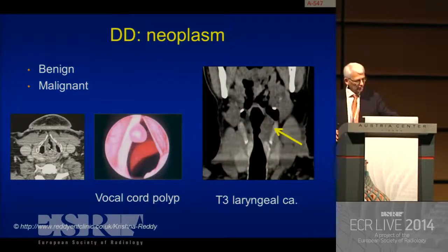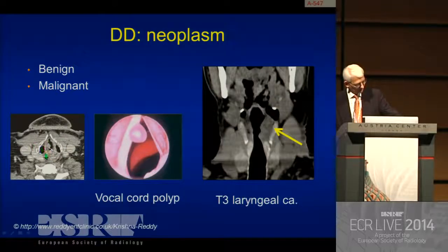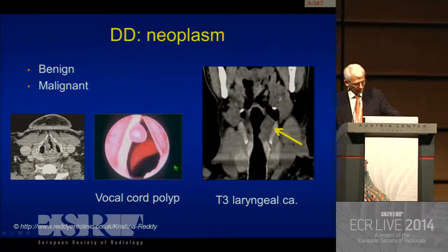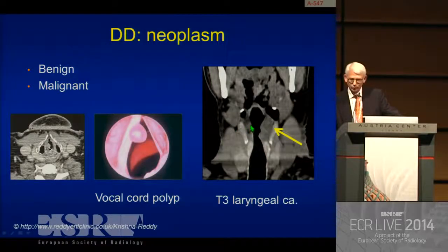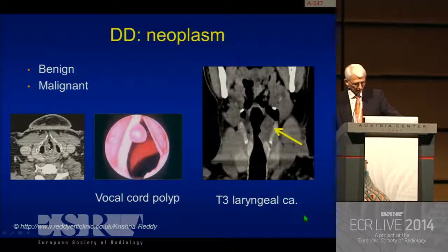Just some imaging examples. This is a CT scan at the level of the right true vocal cord — you see this benign vocal cord polyp, and this is the endoscopic view. This is a benign lesion causing hoarseness. And this is laryngeal cancer. Normally in the coronal plane, we see the muscular density of the true vocal cord, and just above it, more fatty density of the false vocal cord. Here you see an infiltrating lesion involving both the true cord and the false cord, so you can imagine that this cord is not moving normally.